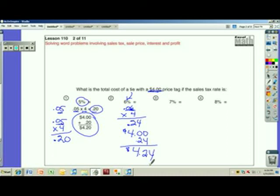Pause the video. Try 3 and 4. Turn it back on when you're ready to see the solution. That would equal .28 and then you do $4 plus 28 cents would equal $4.28. And then Emma's going to go do number four.